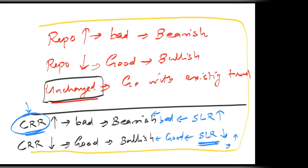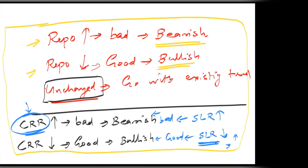This one-page summary covers everything. Just take a screenshot or note it down. This is how you plan your RBI policy trades — no indicators, no support-resistance will work on this day. If repo increases, take a bearish trade. If repo decreases, take a bullish trade immediately. On event days like RBI policy or budget, don't look for indicators — look for what the impact is. That's it about RBI policy.